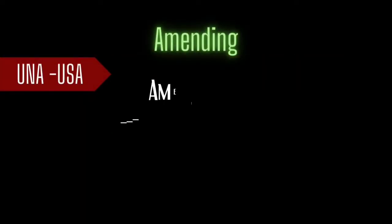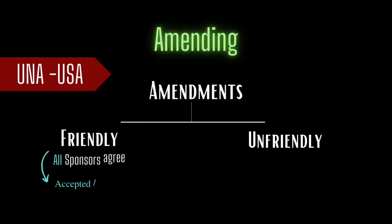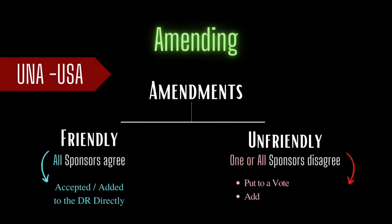Coming to the amendment stage in the UNA-USA procedure, there are two types of amendments. First is the friendly amendment, which are those amendments that all the sponsors agree to. Even if one of the sponsors disagrees, that would be called an unfriendly amendment, which would then be put to a committee vote. It would take a simple majority to pass such an amendment. After amendments are placed in the draft resolution and the committee has no further points of discussion, the finalized document is put to a vote.